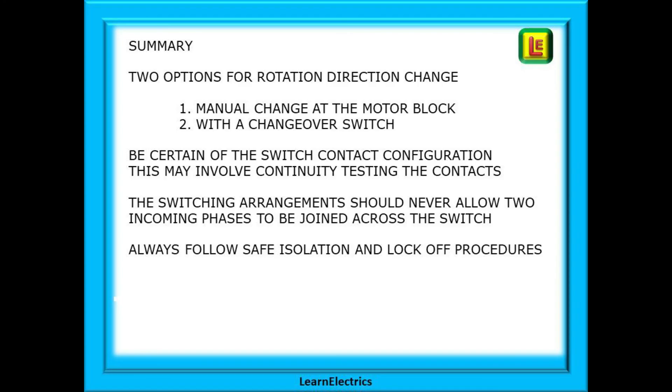So we have two options for changing the direction of rotation: a manual change at the motor block or with a changeover switch. Be certain of the switch contact configuration. This may involve continuity testing the contacts, but it is better to be safe than sorry. Check twice, switch on once. The switching arrangements should never allow two incoming phases to be joined across the switch. And always follow safe isolation and lock-off procedures on any circuits that you work on.